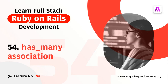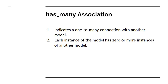Welcome back. This is lecture number 54 from our bootcamp series. In this lecture we're going to discuss has_many association in Rails. The has_many association is used to indicate a one-to-many relationship between two models. To implement this model association, we need to use the has_many macro in the model we want to use as the parent model.